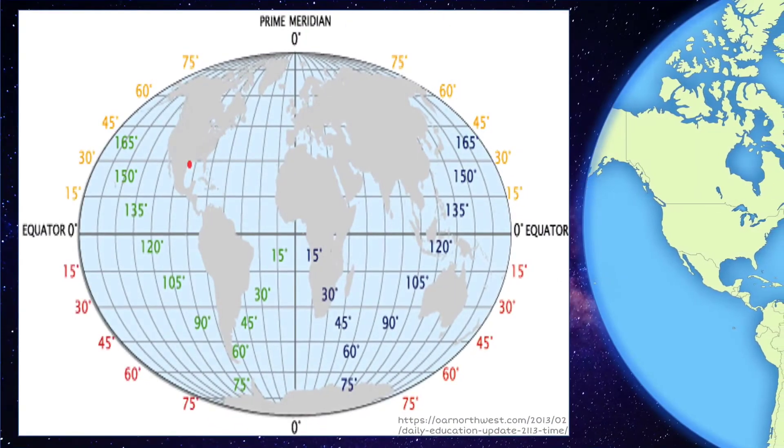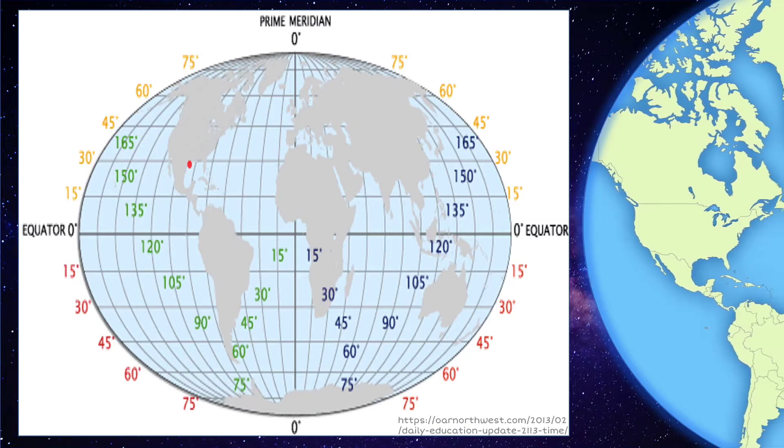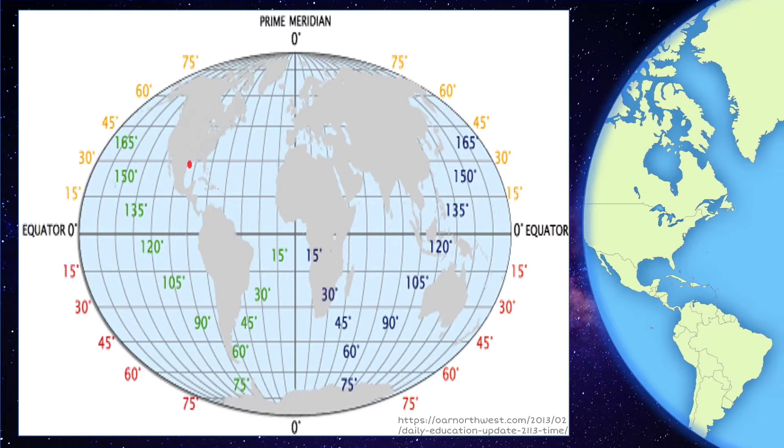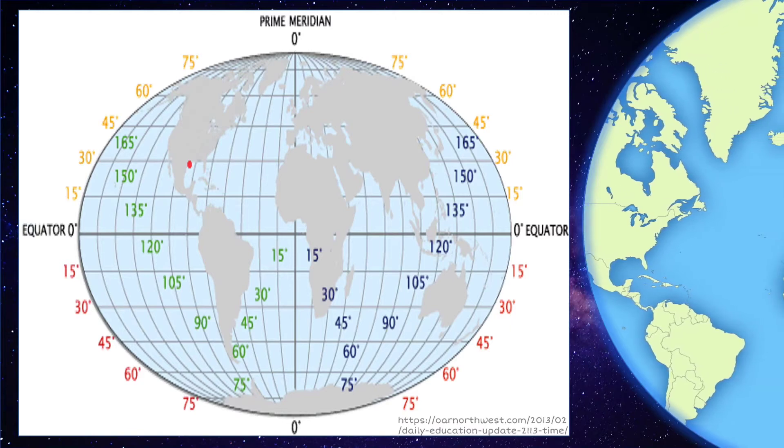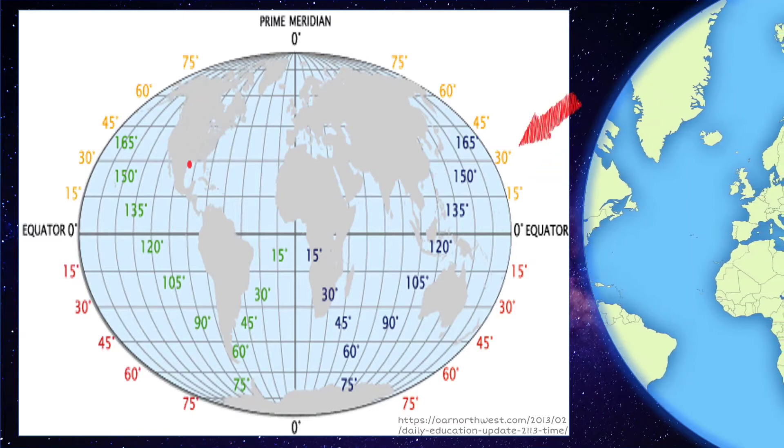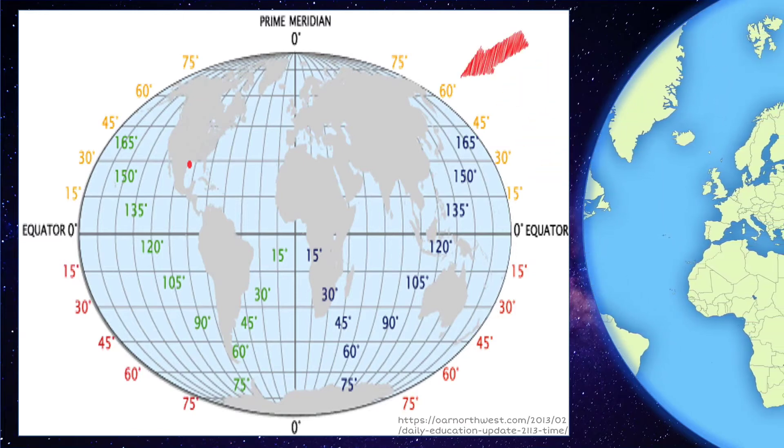Now that we already know these imaginary lines, we can start locating some places. The equator is the reference point for latitude. From the equator, the lines of latitude measure 15 degrees per line.